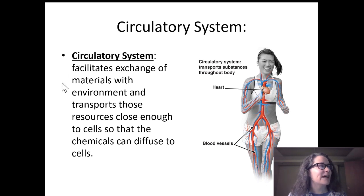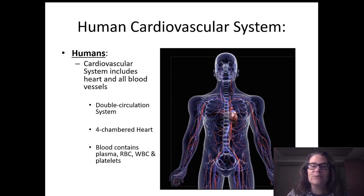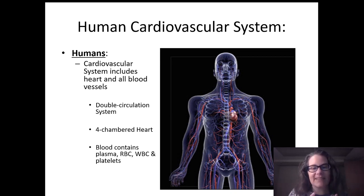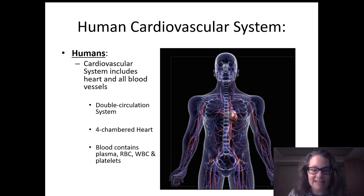This circulatory system is a little different for different animals, but for humans we call it sometimes the cardiovascular system, and it includes your heart and then all of the blood vessels and the blood within those vessels that is connected to that heart. We say that humans have a double circulation system and a four-chambered heart, and our vessels are going to contain blood, which has plasma, red blood cells, white blood cells, and platelets.